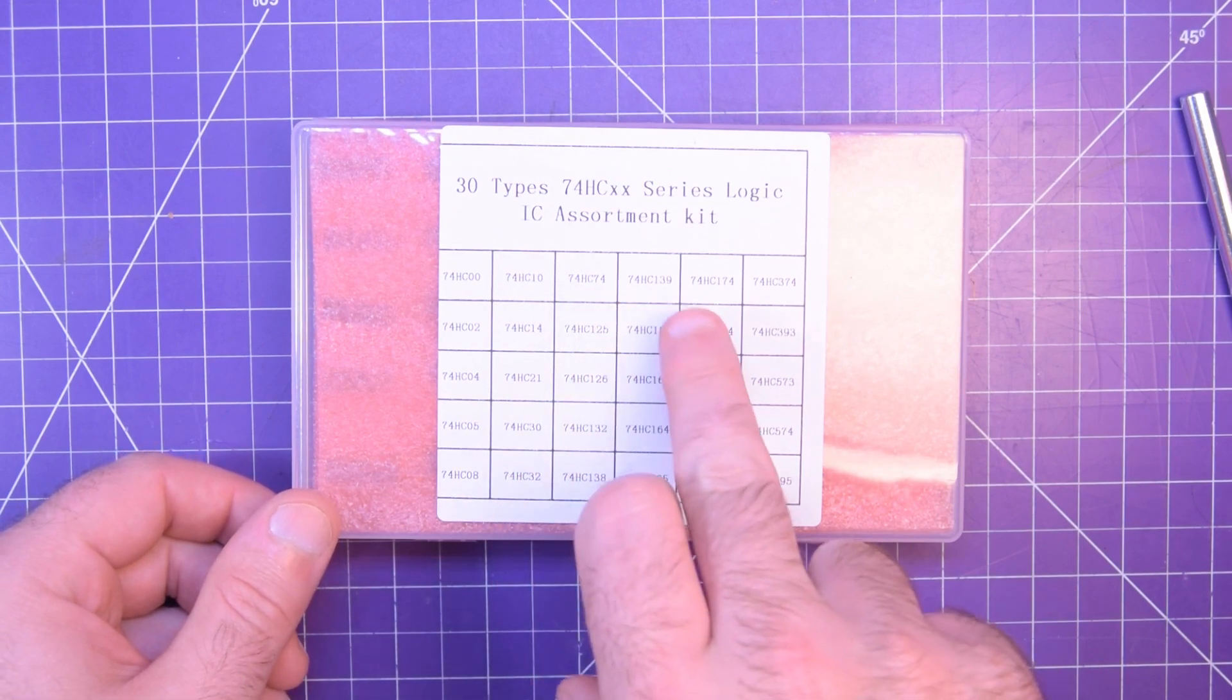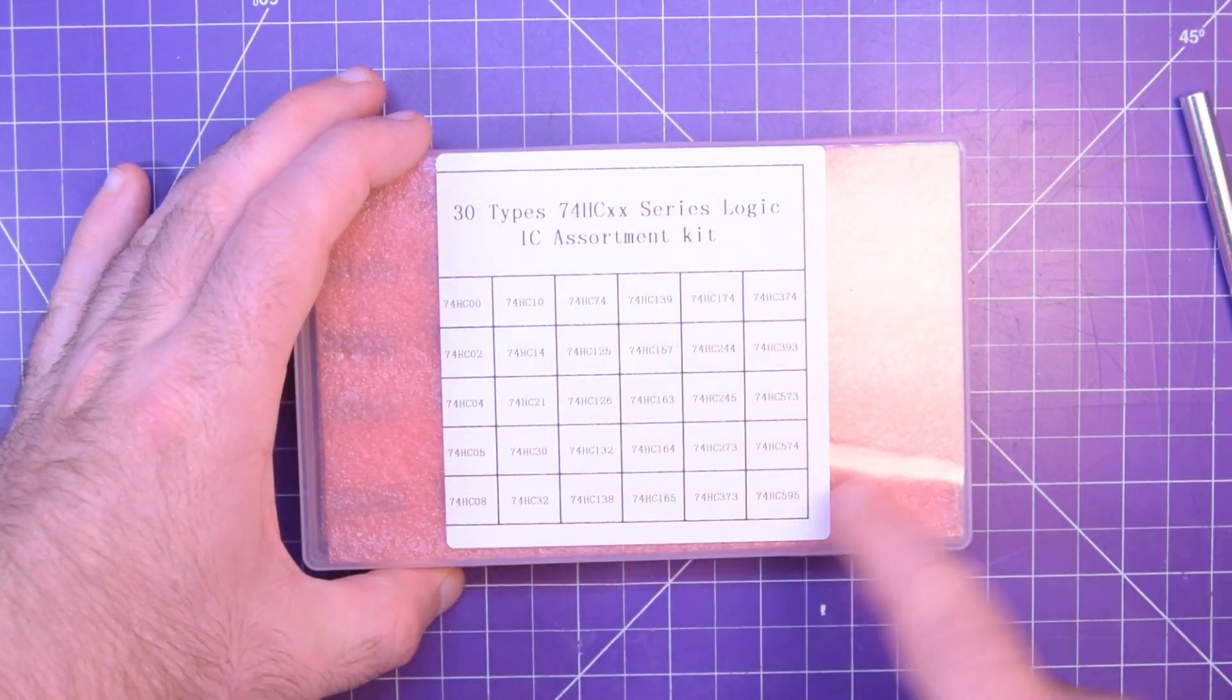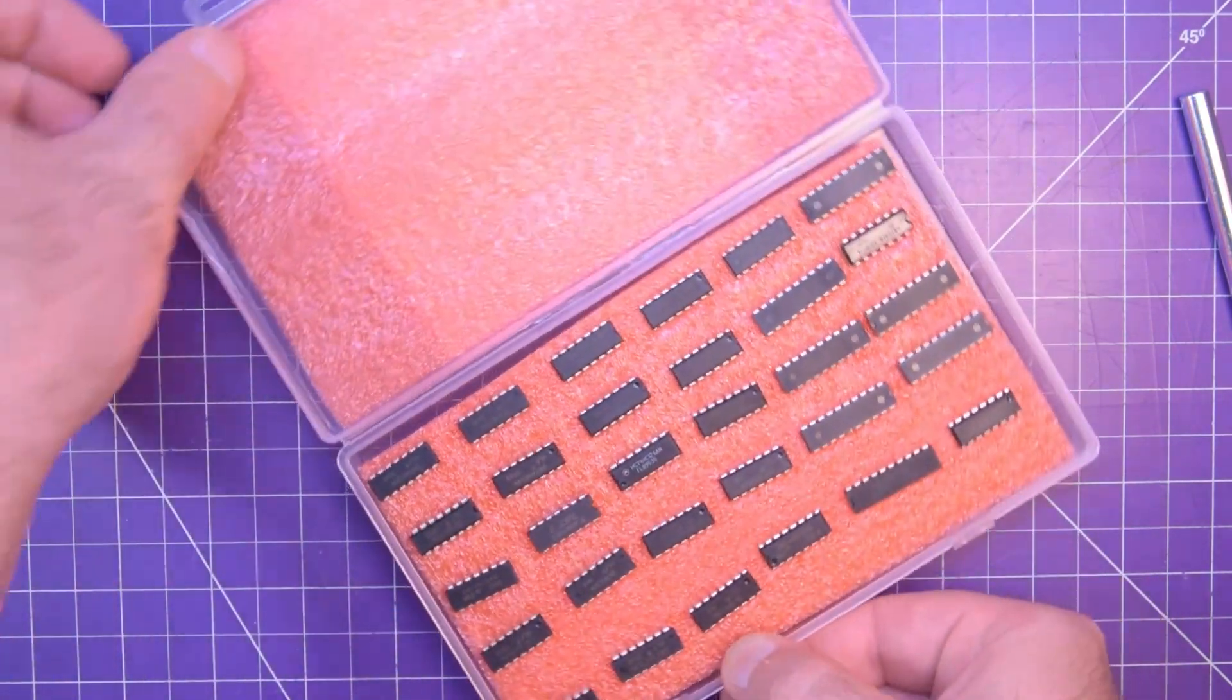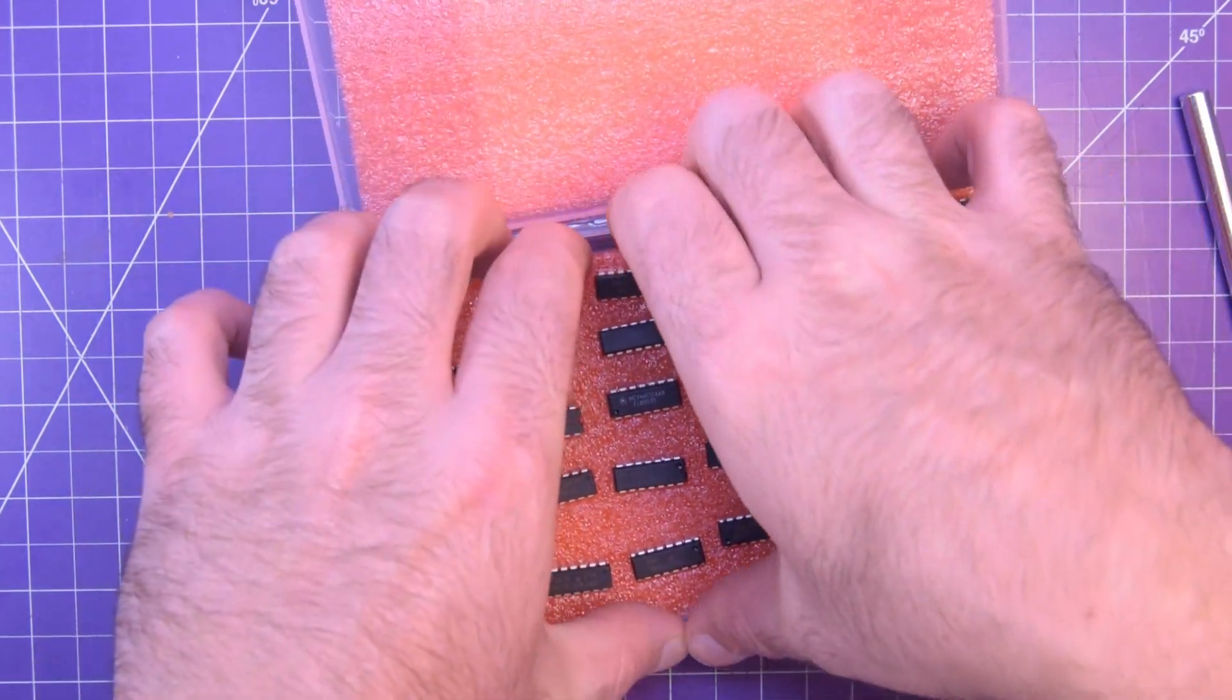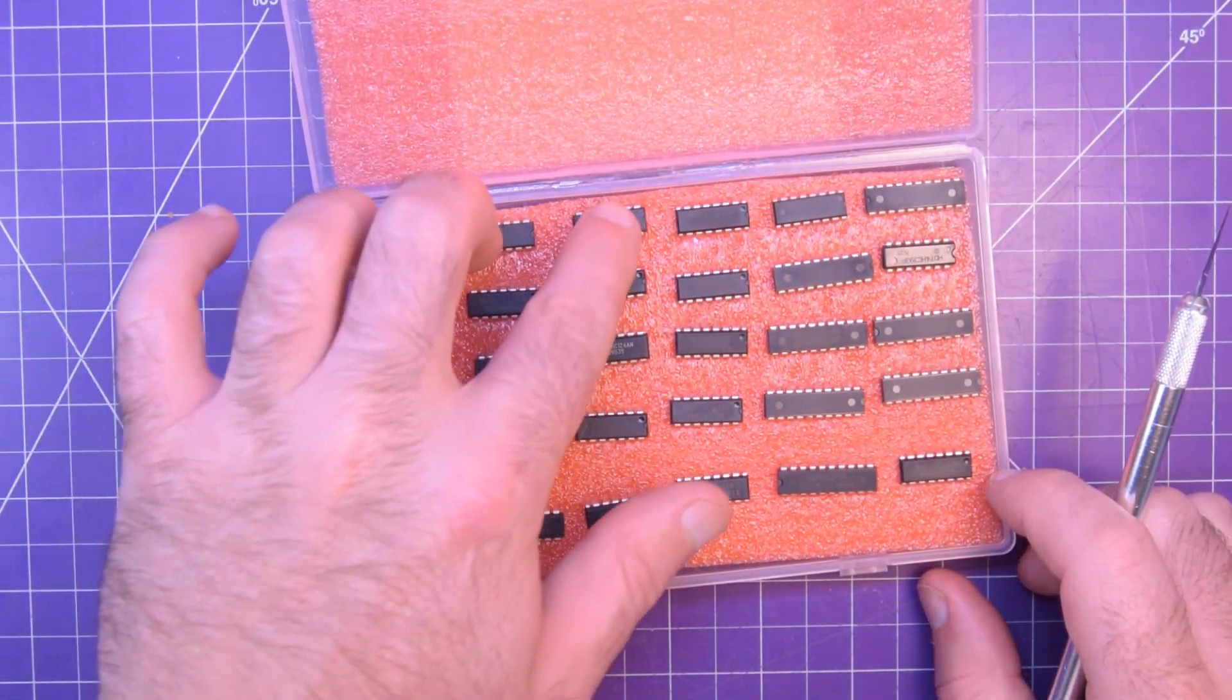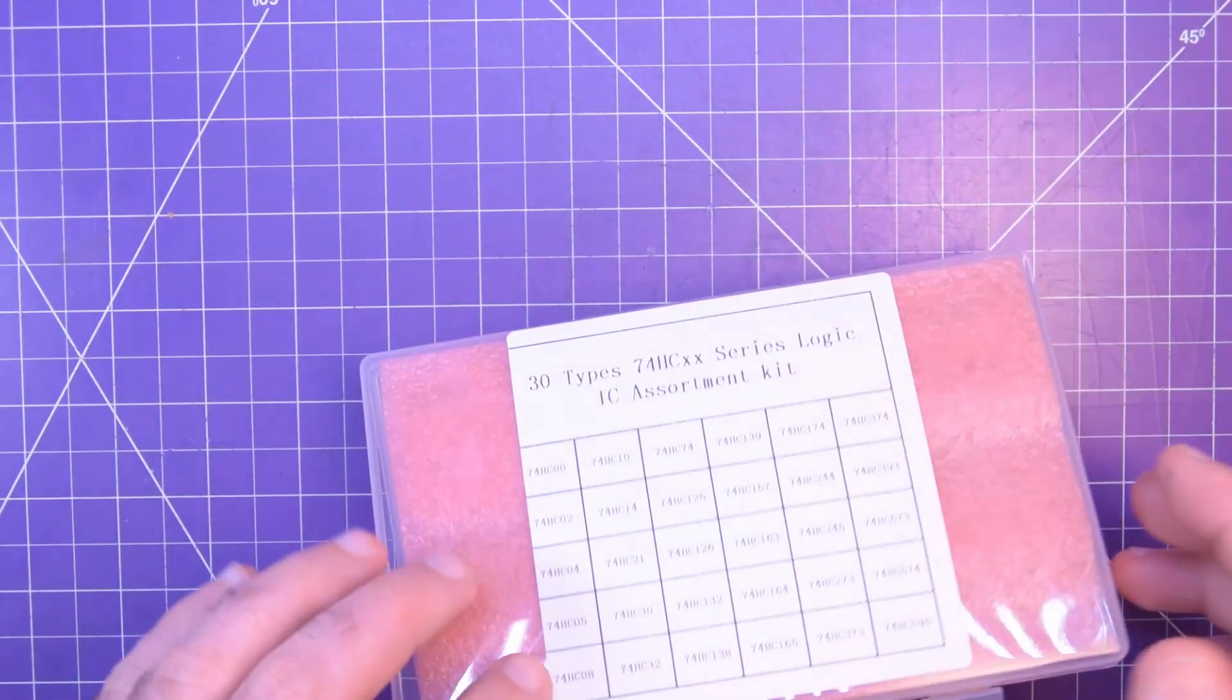You can probably see which ones there are here. 74HC00, HC10, HC74, 139, 174, a whole bunch of these things. This is because I am kind of a newbie when it comes to analog logic, so I figured I would get an assortment of all the chips and have a play with them. Comes with a nice case all punched into this foam here. There are 30 in all, five times six that's 30. I would have to check if they're all here but the quantity looks correct.